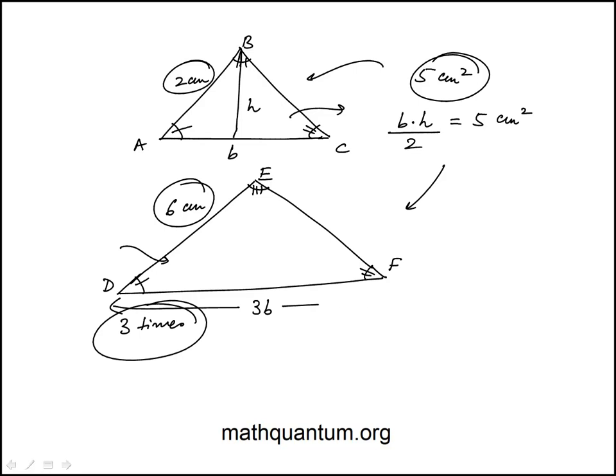And the height would also be 3 times the height. The height is in the same proportion for similar triangles, which means the area of this triangle would be 3 times base times 3 times the height divided by 2.